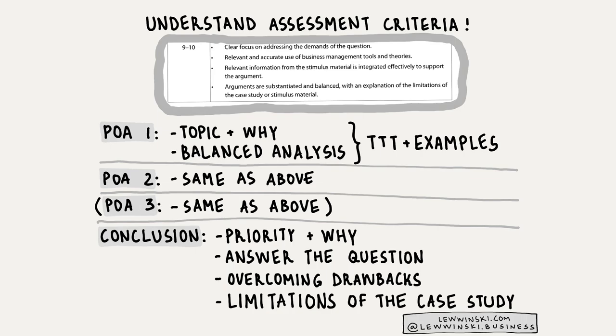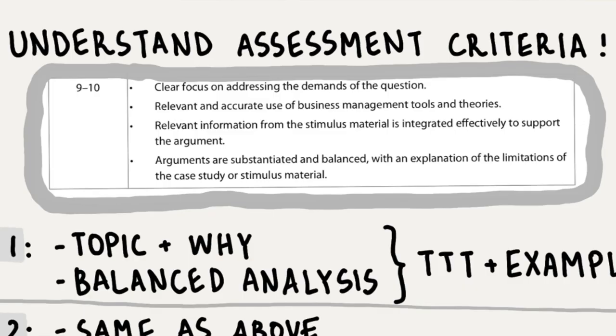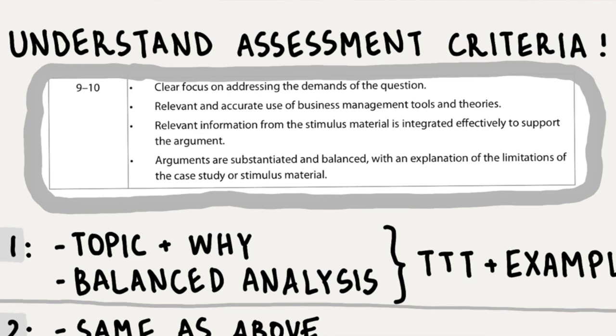If you want to score 9 or 10 — maximum marks — your answer should include four things. I'm talking about the new syllabus, first exam 2024, though it's pretty similar for the old syllabus. First: clear focus on understanding the demands of the question — demonstrate you understand what the question is about and use relevant business tools, techniques and theories. Second: relevant and accurate use of business management tools and theories — whatever tool you use, use it correctly.